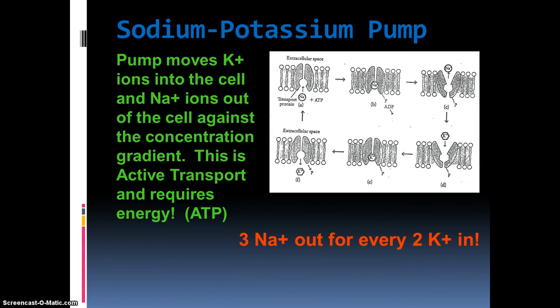Our last type of active transport is the sodium-potassium pump — a specific example of moving sodium molecules out and potassium in. This pump moves two potassium ions into the cell and three sodium ions out. Both are moving against their concentration gradient, so it requires energy. This process actually happens all at once — things are moving in and out at the same time.